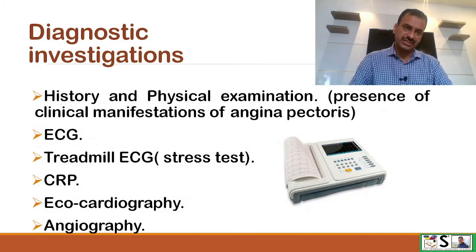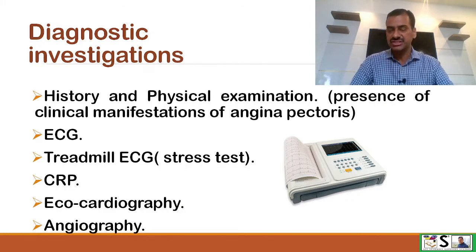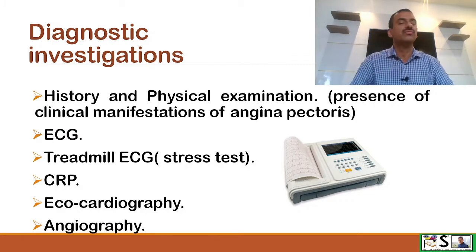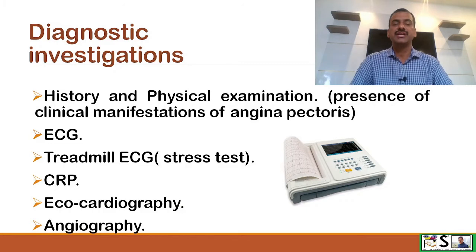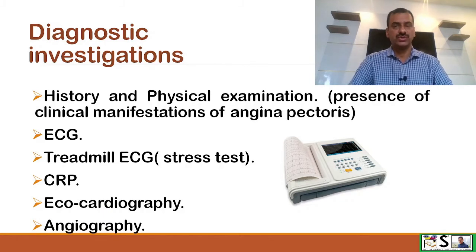Diagnostic investigations: History and physical examination, along with the presence of the clinical manifestations we have discussed, will give a clue of angina. We then proceed with ECG, treadmill ECG — also known as a stress test — CRP, echocardiography, and angiography, which help in confirming the diagnosis.